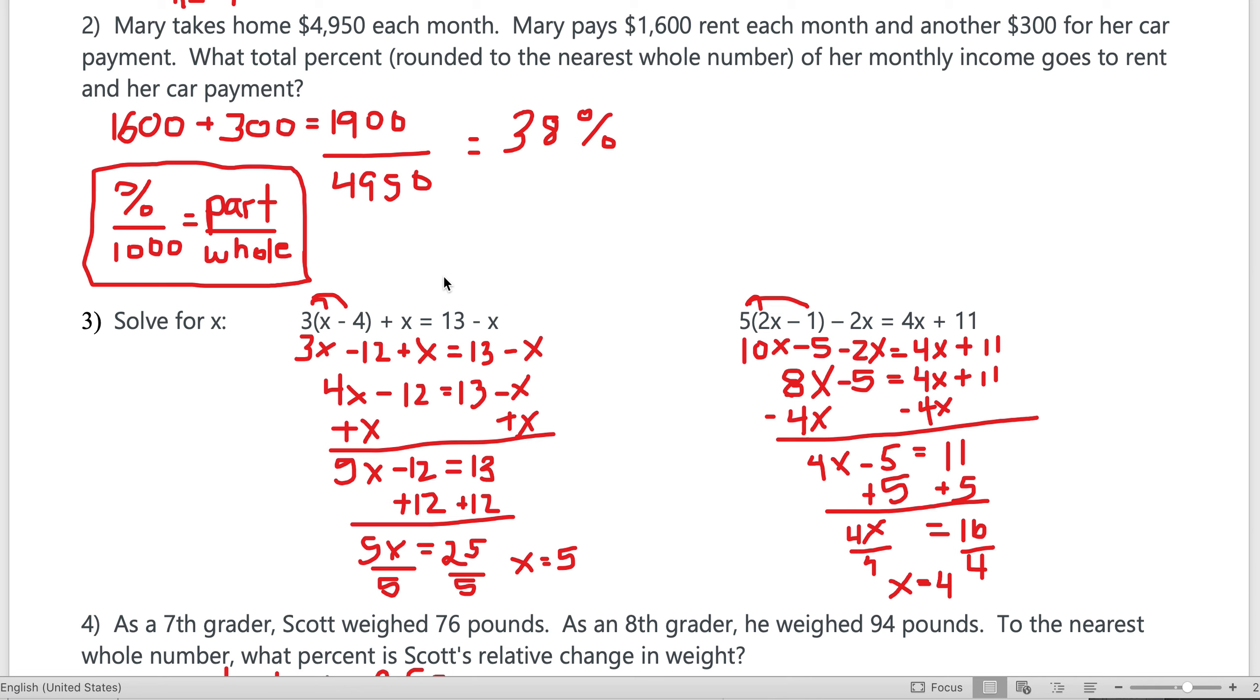Number two: Mary takes home $4,950 each month. Mary pays $1,600 for rent each month and another $300 for her car payment. What total percent, rounded to the nearest whole number, of her monthly income goes to rent and car payment? First, add the $1,600 and $300 to get $1,900.